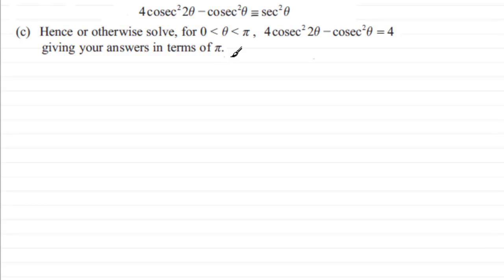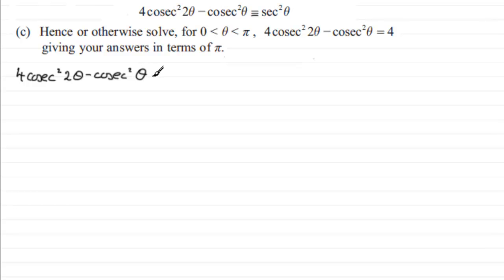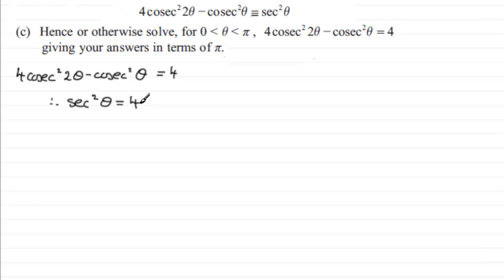First I'll copy down the equation: 4cos²(2θ) minus cos²(θ) equals 4. We pick up on the identity we proved earlier — this expression is identical to sec²(θ). So I'm going to replace all of that with sec²(θ), giving us: sec²(θ) equals 4.